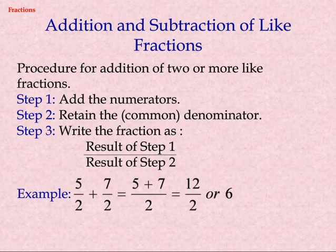Addition and Subtraction of Like Fractions. Procedure for addition of two or more like fractions — Step 1: Add the numerators. Step 2: Retain the common denominator. Step 3: Write the fraction as the result of Step 1 divided by the result of Step 2. Example: five by two plus seven by two equals five plus seven divided by two, equals twelve by two, or 6.